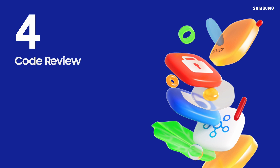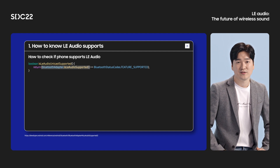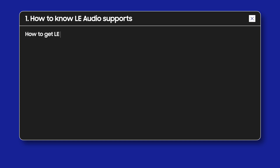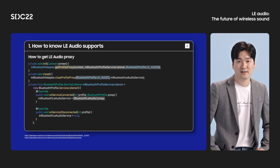All these features can be supported by third-party applications with Android Development API. First, let's check out the API to see whether LE Audio is supported. In Android API level 33, a LE Audio supported API is added to check whether the phone supports LE Audio. Note that this can be used when Bluetooth is turned on. The Bluetooth LE Audio class is a proxy object for controlling LE Audio services through IPC, and it can be used by calling GetProfileProxy API in the same way as other existing Bluetooth profiles. Also, an LE Audio type of Bluetooth profile is added to API level 33. You can always check the Android developer site for more information.